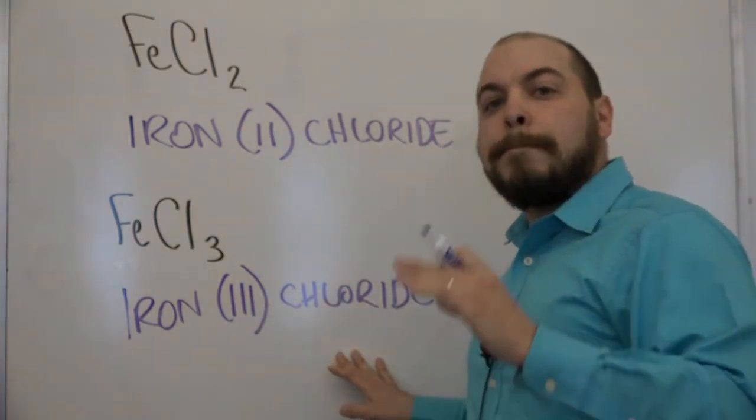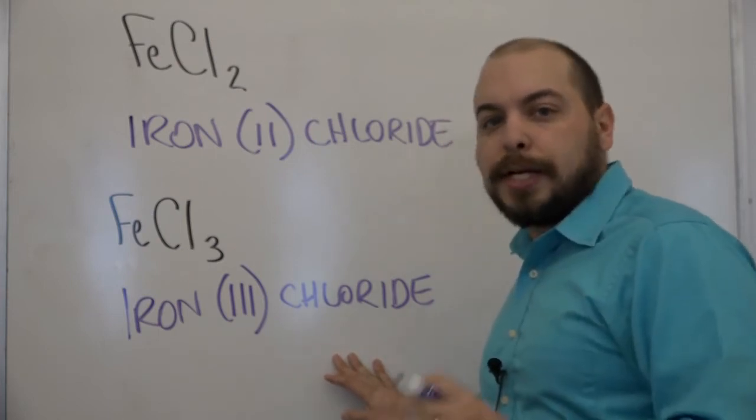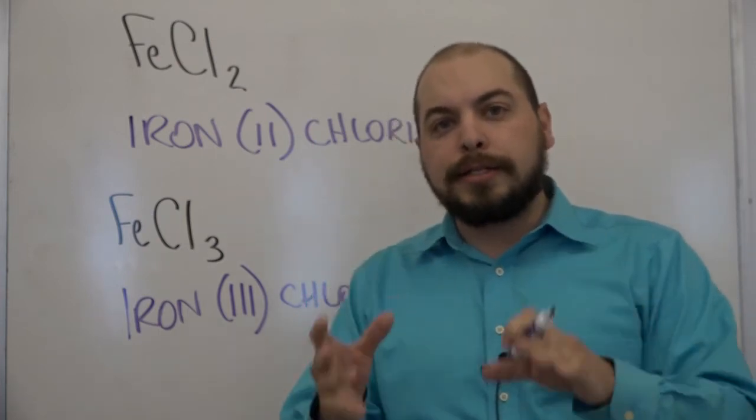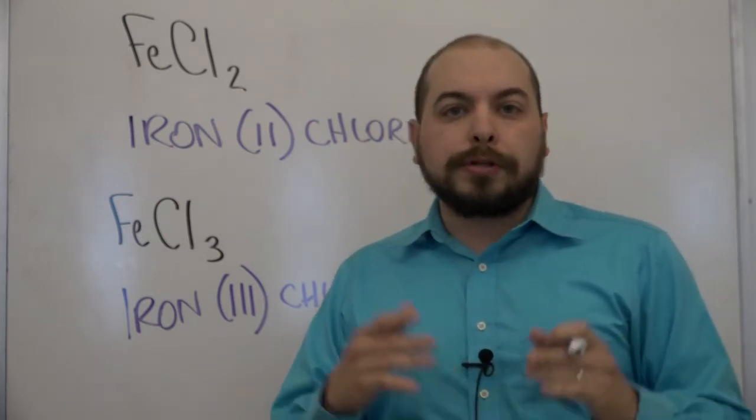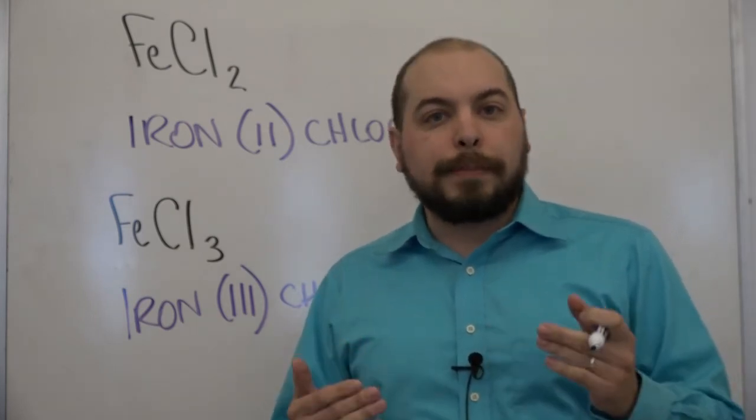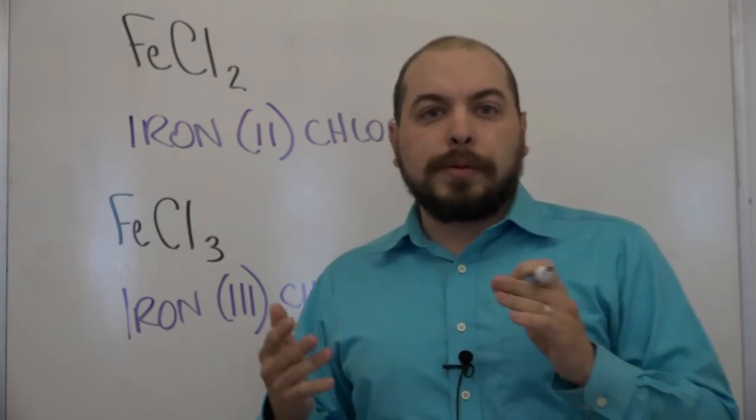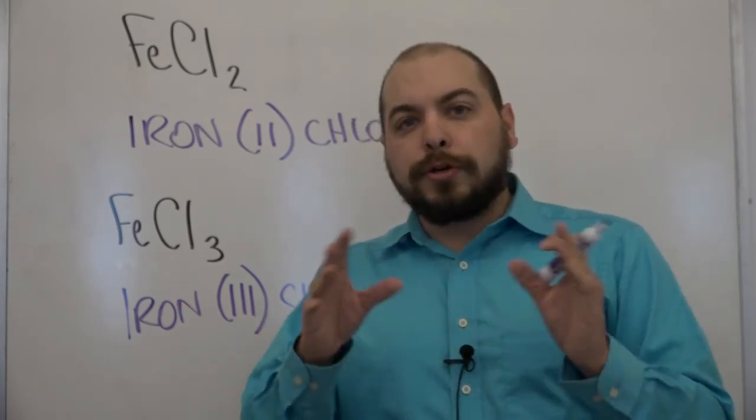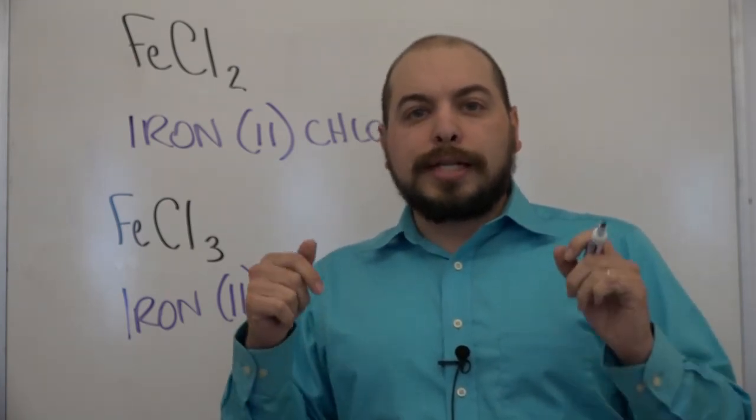Now this is the case with most transition metals where there are variable oxidation states because of the interaction between the S and the D sublevels. However to be aware there are some that only have a single oxidation state. For example zinc is always going to be plus two, silver is always going to be plus one. So you're going to want to look at those exceptions to the rule in the link down below.